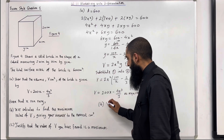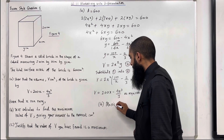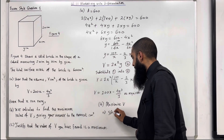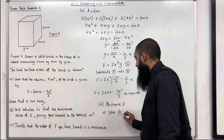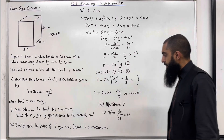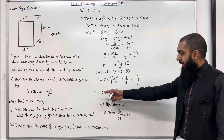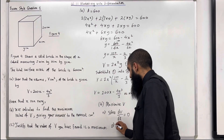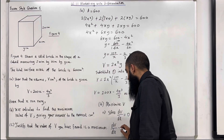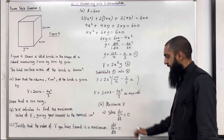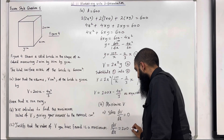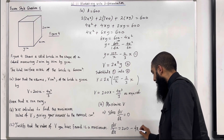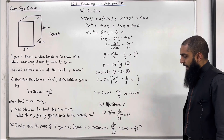To maximise v, this implies that we need to solve dv over dx equal 0. We've got the volume equation and we have to differentiate with respect to x. So dv over dx equals — differentiating 200x gives 200, take away — differentiating the second term gives minus 4x squared.